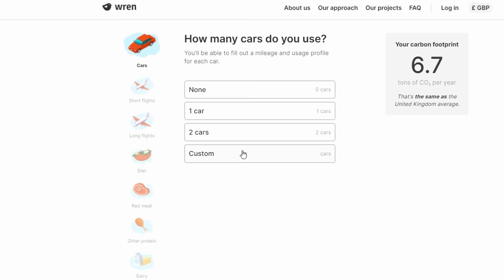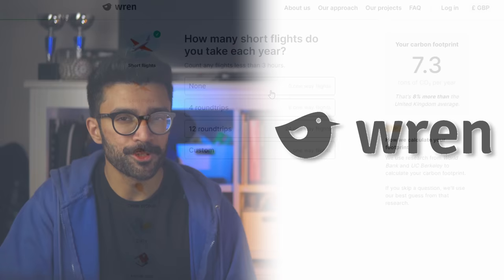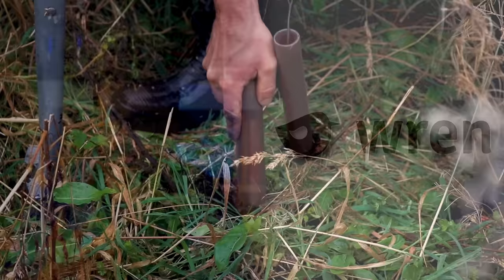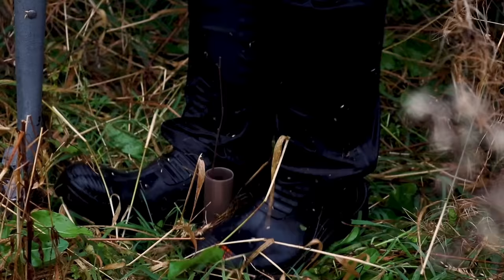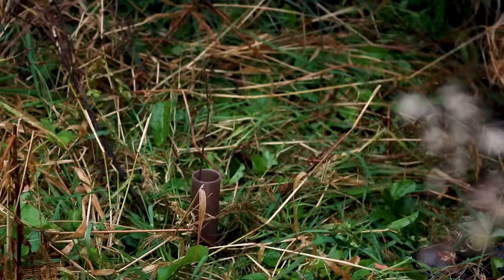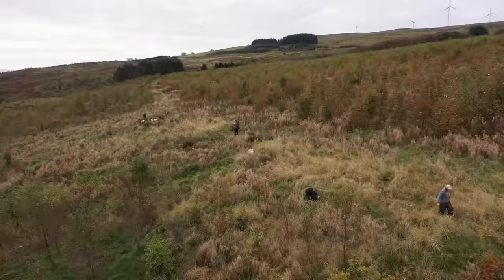You can also make a monthly contribution to offset your carbon footprint, by funding diverse carbon reduction projects, like tree planting, mineral weathering, and rainforest protection. Wren will then meticulously quantify what impact each project is having, and send you monthly updates, so that you know that your money is making a difference.